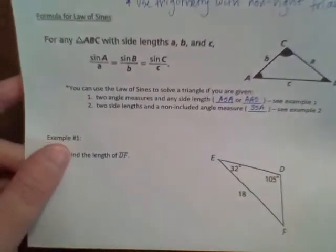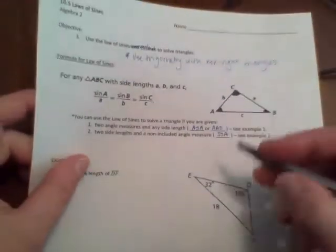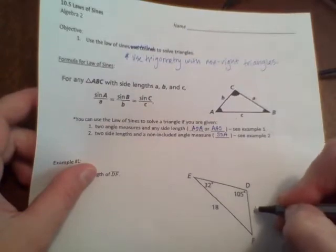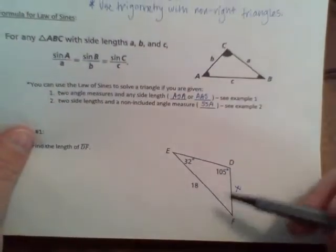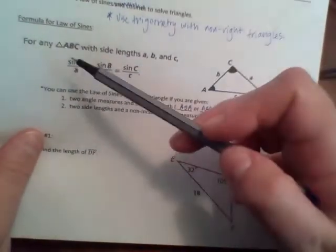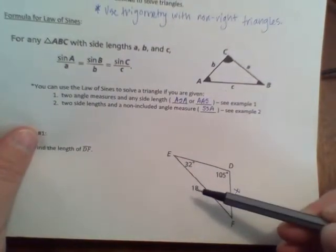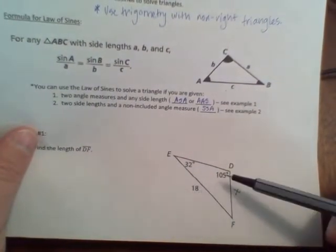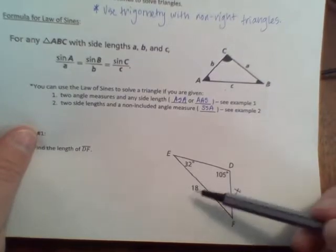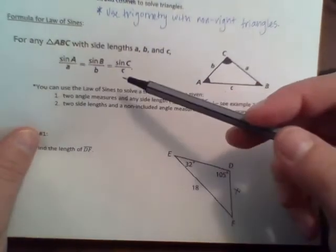So taking a look, we are trying to find the length of DF. All right, so this is the one that we are trying to find here, and we are given its opposite angle, so we could probably set up a proportion here, and then we're given this angle and its opposite side. So you always need to have this one set of angle and side in order to be able to solve these proportions.